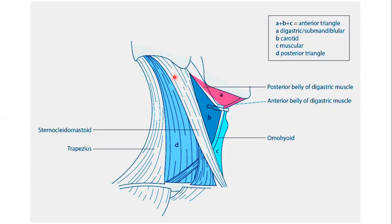Let's make clear the concept of why these triangles are made in anatomy. It's not to make things complicated — it is just to make clear the precise location of structures: arteries, vessels, and nerves, and where they are present accurately, to locate the accurate position of these structures in the neck, anteriorly and posteriorly.